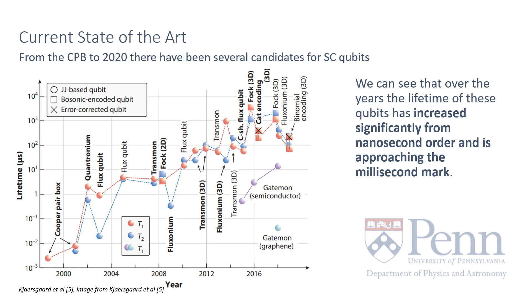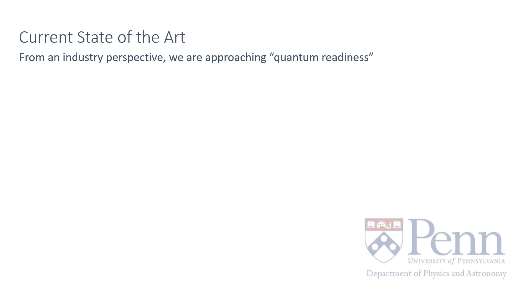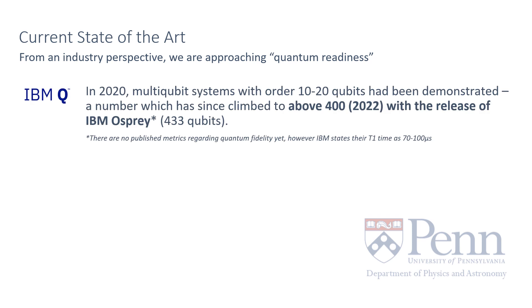Through several iterations of the transmon, the flux, fluxonium, and other qubit types, the lifetime achieved has come from nanosecond order to now approaching milliseconds. We can also see that bosonic encoded and error-corrected qubits have begun to enter the field. Many entities are looking to enter what has been coined quantum readiness. Among several companies building and developing quantum technology largely based on the transmon qubit, two front runners are setting a definitive pace in the market. In 2020, we saw the development of multi-qubit systems of order 10 to 20 qubits. However, IBM in 2022 raised that bar to 433 qubits in their IBM Osprey system.